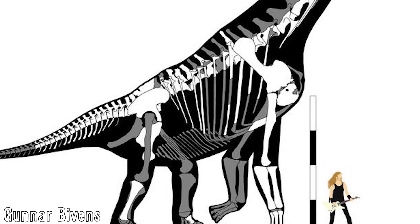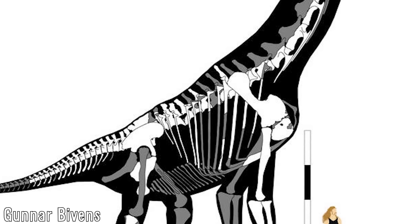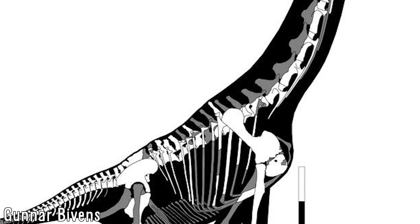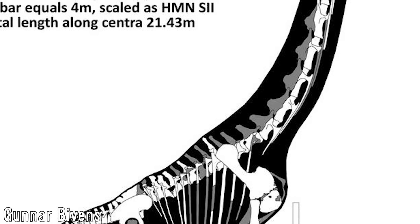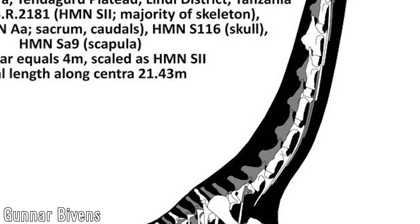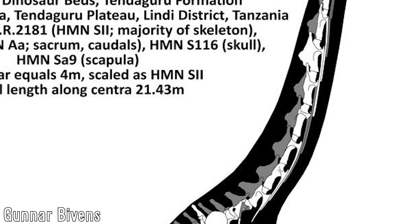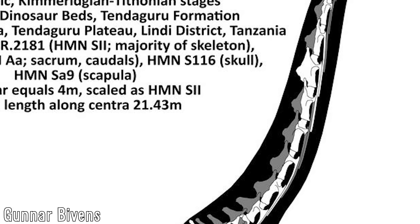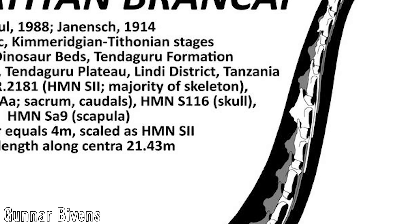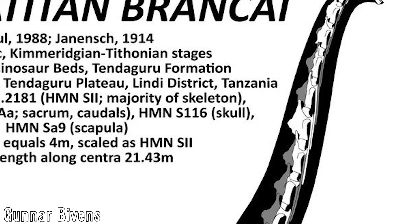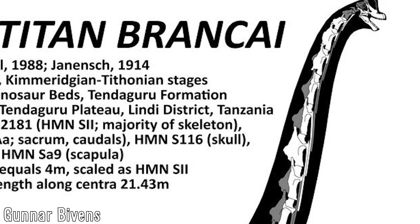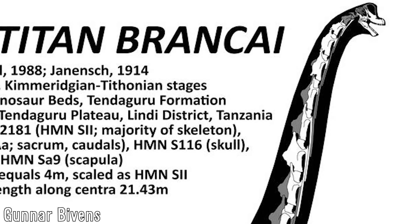Continuing on, the many large bones unearthed in the region, which all belonged to one apparent taxon, were given the name Brachiosaurus brancai by Werner Janensch in 1914, with them being known from five partial skeletons, most notably three skulls — which were exceptionally rare to find among sauropods, given their small size in comparison to their bodies, alongside their comparative fragility.